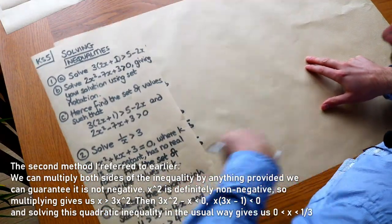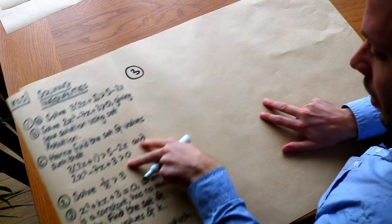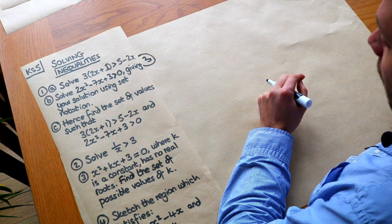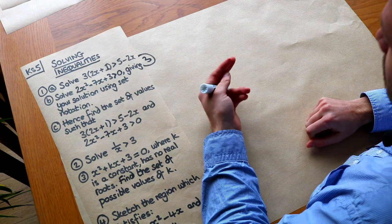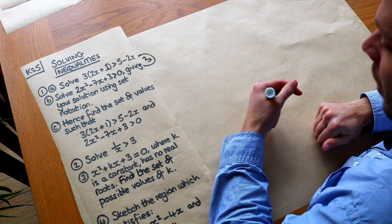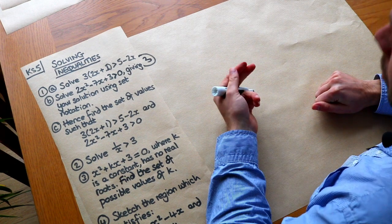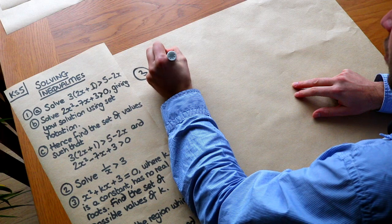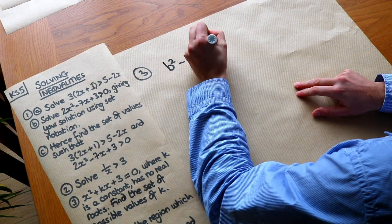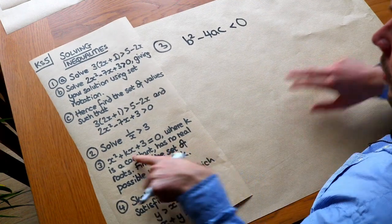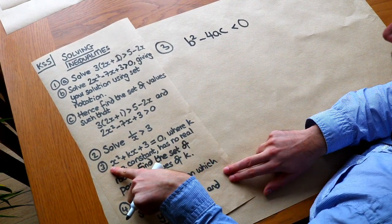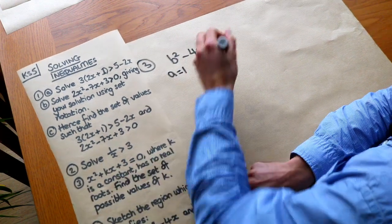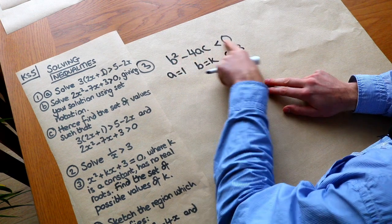This type of problem is now in the new A-level spec. For question 3: x² + kx + 3 = 0, where k is a constant, has no real roots - find the set of possible values of k. We use the discriminant. For no real roots, the discriminant b² − 4ac < 0. Here a = 1, b = k, c = 3, so we get k² − 4(1)(3) < 0, which is k² − 12 < 0.